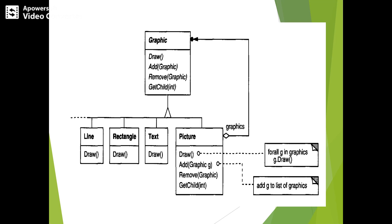These classes implement draw operations to draw a line, rectangle, and text respectively. Primitive graphics have no child graphics, meaning none of these subclasses — line, rectangle, text, picture — implement any child-related operations.